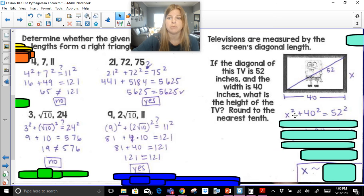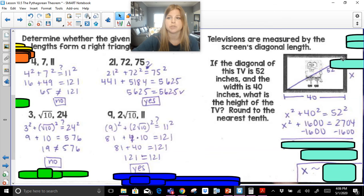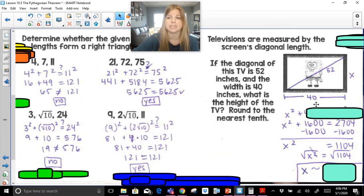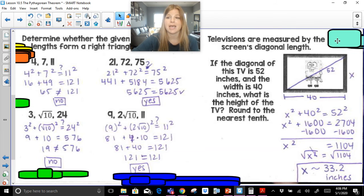So to solve for that leg, it would be x squared plus 40 squared equals 52 squared. 40 squared is 1600, 52 squared is 2704, subtract 1600 on both sides. We would get x squared equals 1104. Let's take the square root. This would then just be calculator work, and you would get approximately 33.2 inches.